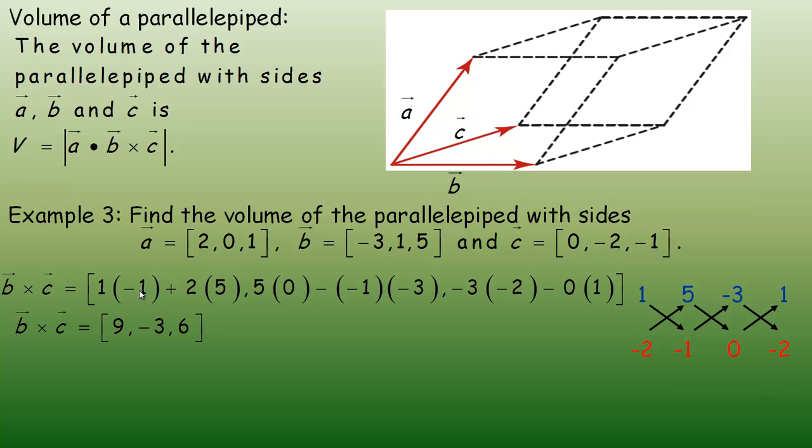This would be negative 1 plus 10, which is 9. Zero minus 3 would be negative 3. And 6 minus 0 would be 6 for the z component.